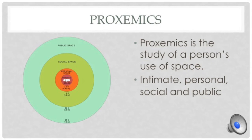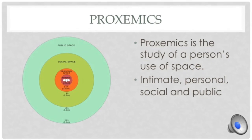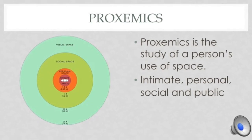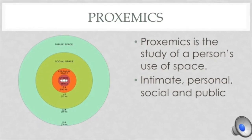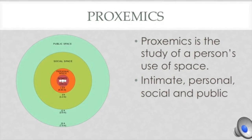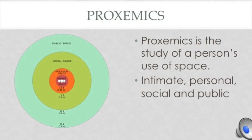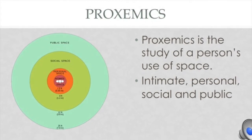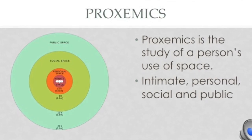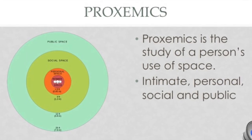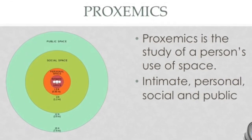So back to proxemics. Proxemics is a study of a person's use of space. Edward Hall claimed there were four proxemic levels: intimate, personal, social, and public, as you can see on the graph. EVT states that each person has an expectation of personal and conversational space. As humans, we have desires for close proximity, but we also desire space and distance.